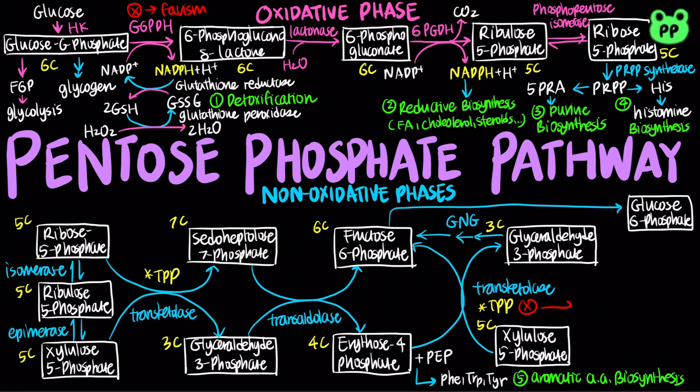Lastly, a severe deficiency of thiamine, a component of TPP, can lead to Wernicke-Korsakoff syndrome, and it can be exacerbated by a mutation in transketolase that results in an enzyme with a lower affinity for TPP, worsening the symptoms of Wernicke-Korsakoff syndrome, including severe memory loss, mental confusion, and partial paralysis.